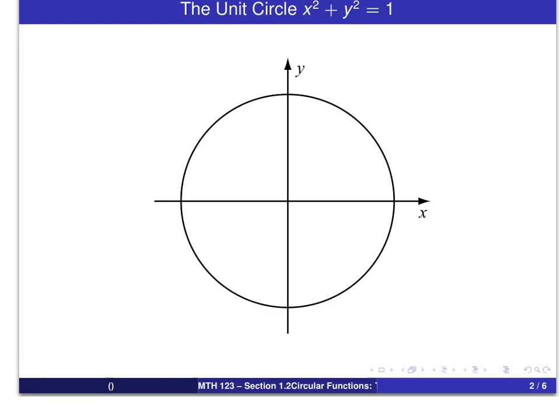The key idea is to measure the length of an arc along the circle. To do this, we always start our measurement at the point (1, 0). If the arc has a positive direction, then we measure it starting at the point (1, 0) and moving in a counter-clockwise direction. The arc will come to end at a certain point, which will be called the terminal point of the arc, and generally we're going to use (x, y) to represent the coordinates of the terminal point.